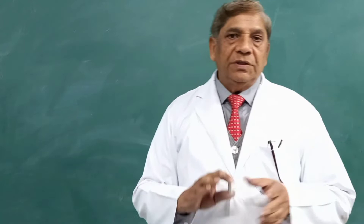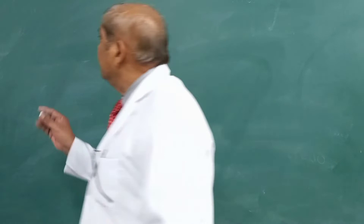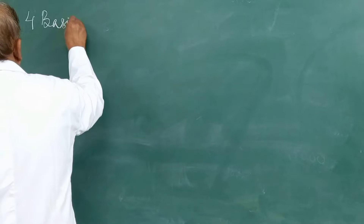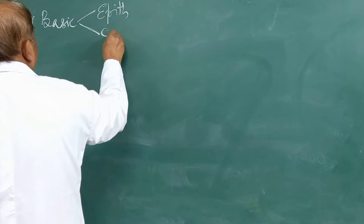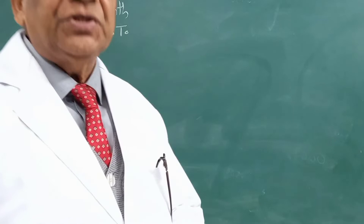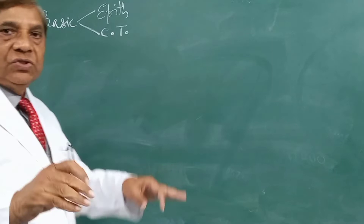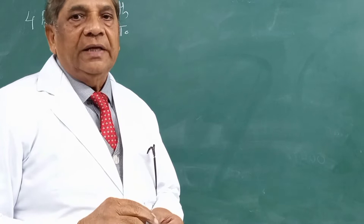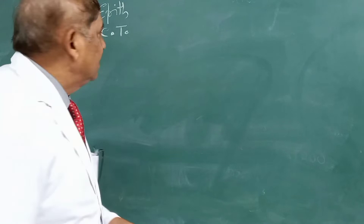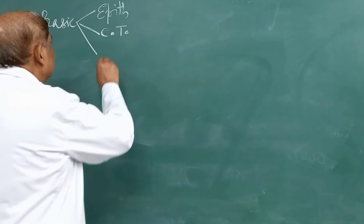Let us begin with the basic tissues of the body. In our introductory lecture I told you that our body consists of four basic tissues. These are called the epithelial tissue, the connective tissue — which will also include cartilage and bone, which are specialized connective tissues — besides the connective tissue proper, which consists of loose connective tissue and dense connective tissue. The third basic tissue of the body is the muscular tissue.